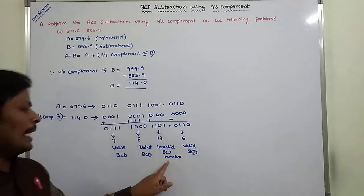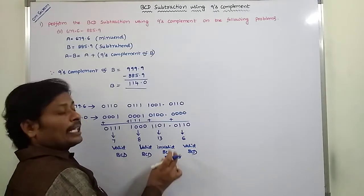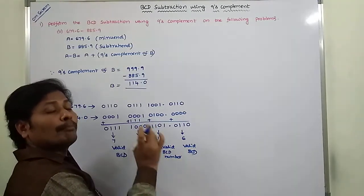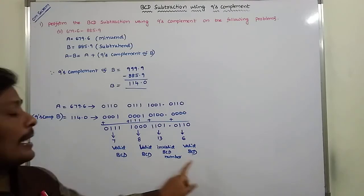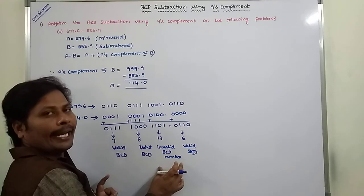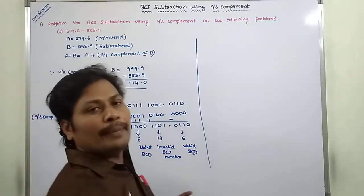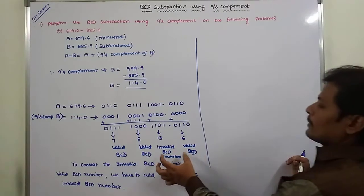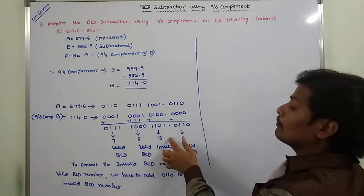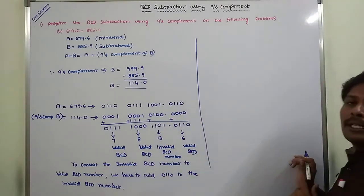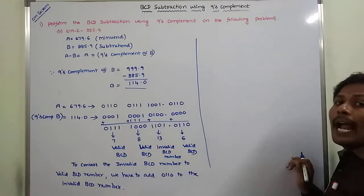Whatever invalid BCD number we get, that invalid BCD number can be converted into a valid BCD number by adding 0110. For the three valid BCD numbers, there is no need to add 0110. We only add 0110 to the invalid BCD number to convert it to a valid BCD number. For valid BCD numbers, there is no need to add anything.